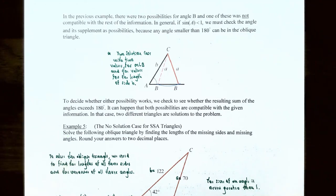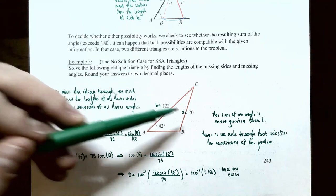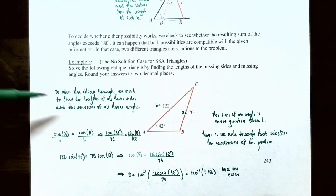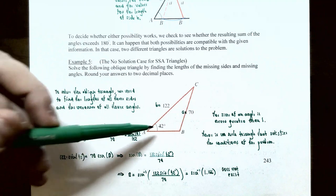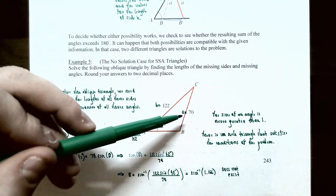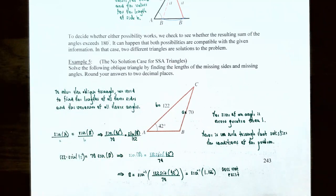Example five is the no-solution case for an SSA triangle. Solve the following oblique triangle, rounding to two decimal places. We are given angle A = 42°, side A = 70, and side B = 122. Using the law of sines: sin(42°)/70 = sin(B)/122. Cross-multiplying: 122·sin(42°) = 70·sin(B), so sin(B) = 122·sin(42°)/70. Using the inverse sine function on the calculator gives a domain error.